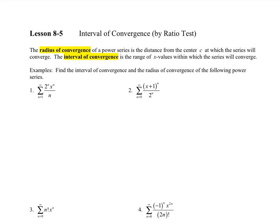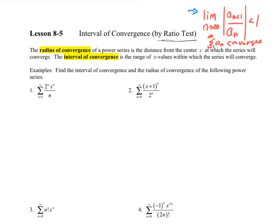This is lesson 8.5, interval of convergence, and we're going to use the ratio test to sort some of this out. The ratio test says that if I take the next term, put it over my current term, and take the limit as n goes to infinity of that, and that number is less than 1, that tells me my series converges. So we want to find out for which values of x does this series converge, because we have series with x in them.